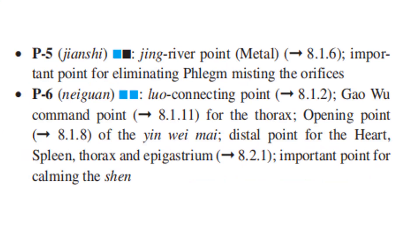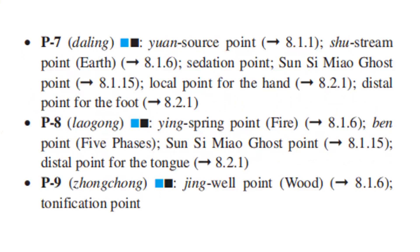P6 is the Luo Connecting Point, the Gao Wu command point for the thorax, and the opening point of the Yin Wei Mai. It is the distal point for the heart, spleen, thorax, and epigastrium, and an important point for calming the Shen. P7 is the Yuan Source Point, Shu Stream Point, Earth point, sedation point, Sun Si Miao ghost point, local point for the hand, and distal point for the foot.